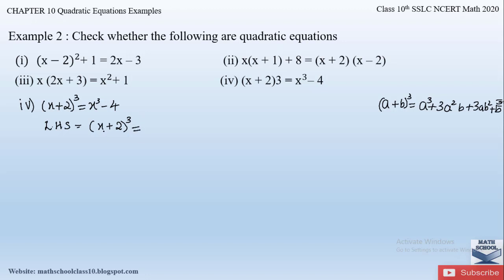Applying the formula with a = x and b = 2: first term is x³, then 3 × x² × 2 = 6x², then 3 × x × 2² = 3 × x × 4 = 12x, and finally 2³ = 8. So (x + 2)³ = x³ + 6x² + 12x + 8.